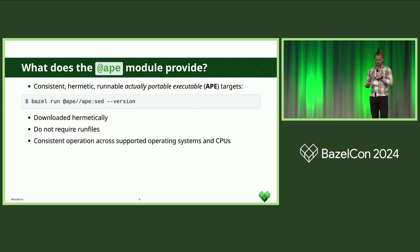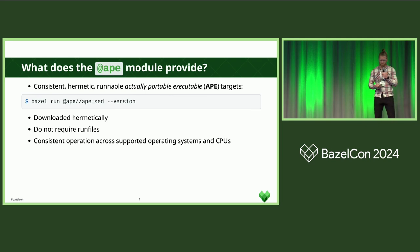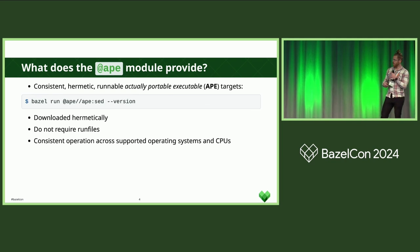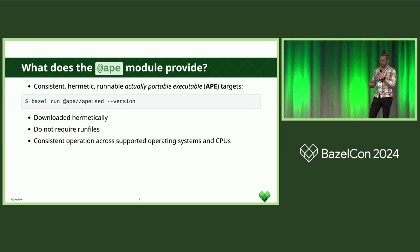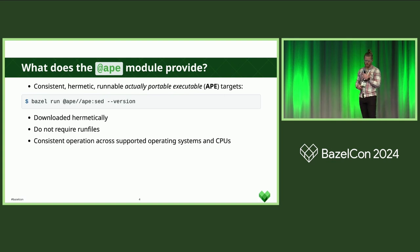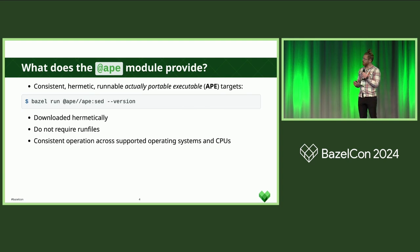You can use this today: bazel run APE, APE sed, and you can get the version. There are lots of tools available: sed, Python, Bash, ls, and lots of the base Unix tools. They are all downloaded hermetically. They are individual binaries, so they do not require runfiles, and they get consistent operation across operating systems and CPUs.